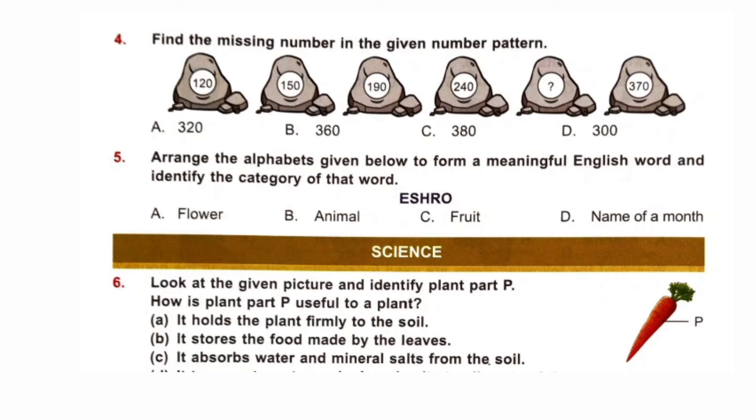Question number 4. Find the missing number in the given number pattern. Numbers are 120, 150, 190, 240, dash, 370. Clearly, this is an increasing order. 120 plus 30 equal to 150. 150 plus 40 equal to 190. 190 plus 50 equal to 240. So, increasing order is plus 30, plus 40, plus 50. So, next will be plus 60. 240 plus 60 equal to 300. Option D is correct. Once again, 300 plus 70 equal to 370.